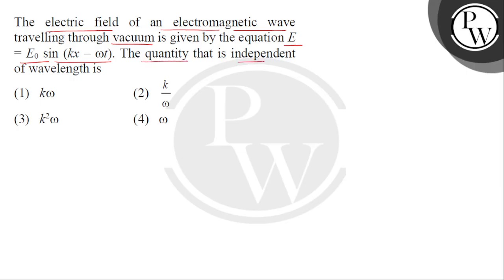The quantity that is independent of wavelength is. So, given है हमें एक electromagnetic wave जो की free space और vacuum में से travel हो रही है उसके electric field equation का mathematical form which is E equals to E0 sin within bracket Kx minus omega t.